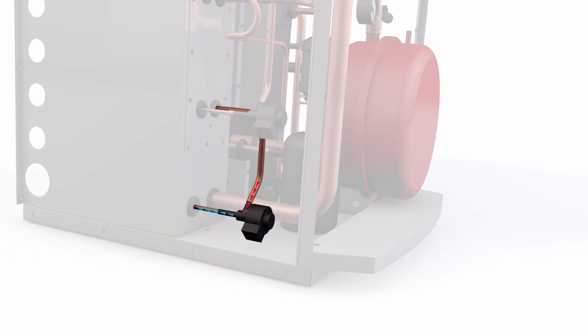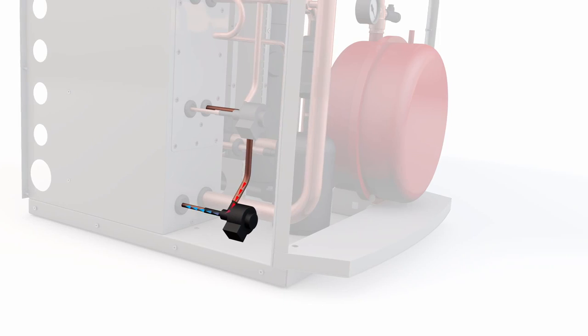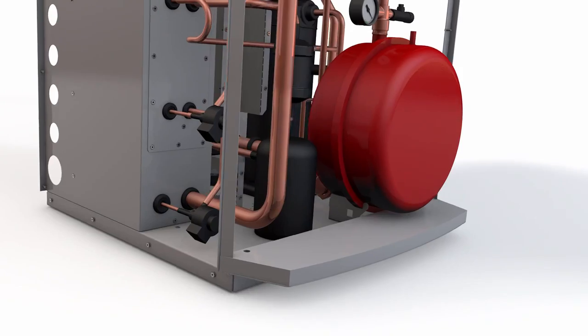The electronic expansion valve acts like a throttle to balance the flow of refrigerant flowing through the system. It prevents the compressor being under or overloaded, which optimizes system performance and efficiency.